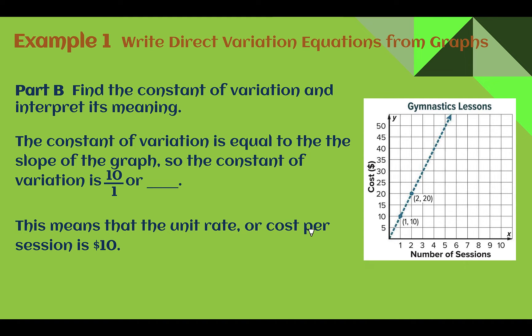Part B, find the constant of variation and interpret its meaning. So we just found the constant of variation was equal to the slope, which was 10 over 1, or 10. What did it mean in this context? Next, it meant that the unit rate, that's another word that means constant of variation, was $10 per session. So if we look at this, if you're not sure exactly what it's meaning, 10 was our rise. Well, what unit is on the side for our rise? That is our cost. Our 1 was in our run section. What unit is going along the bottom? That is the sessions. So this was $10 for one session.